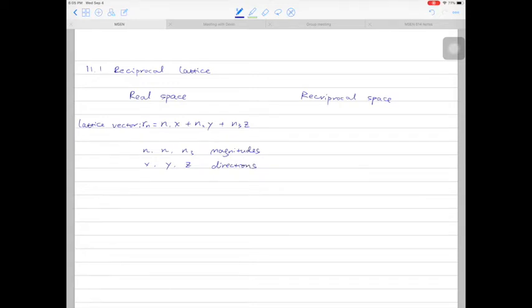In the reciprocal space, we write the corresponding lattice vector, so we call this R star n or Rn star. We write that as n1 star x star plus n2 star y star plus n3 star z star. So what are the relationships of n1 star n2 star n3 star to n1 n2 n3? The magnitude of n1 star is equal to 1 over n1. Then similarly, n2 star is equal to 1 over n2 and n3 star is equal to 1 over n3.